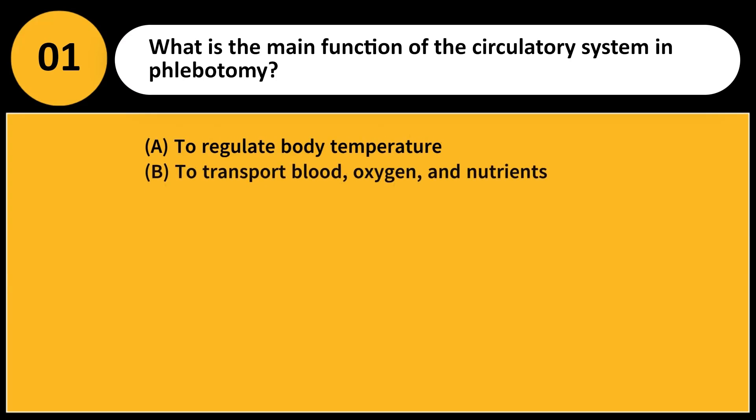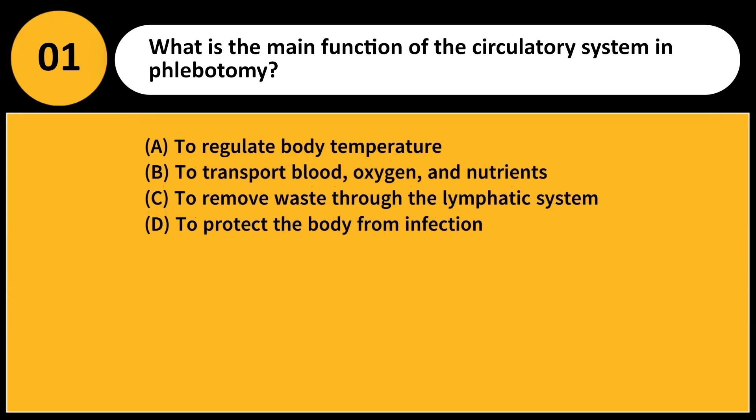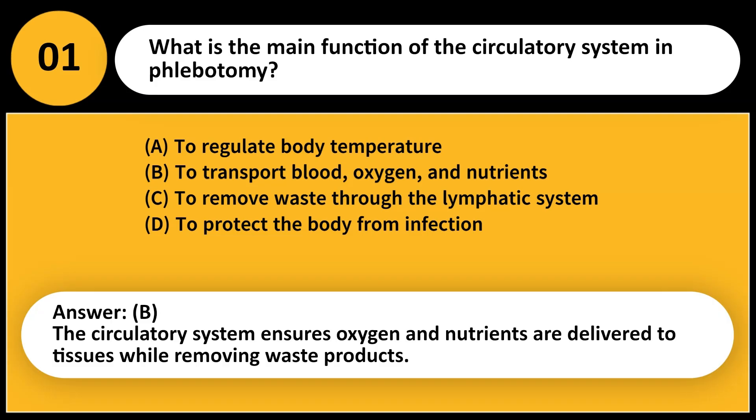What is the main function of the circulatory system in phlebotomy? A. To regulate body temperature. B. To transport blood, oxygen, and nutrients. C. To remove waste through the lymphatic system. D. To protect the body from infection. Answer: B. The circulatory system ensures oxygen and nutrients are delivered to tissues while removing waste products.